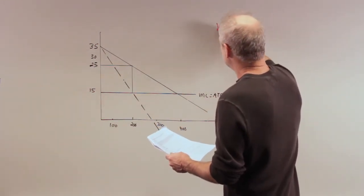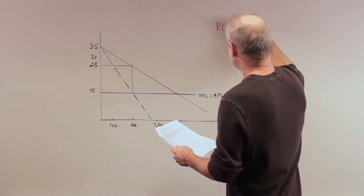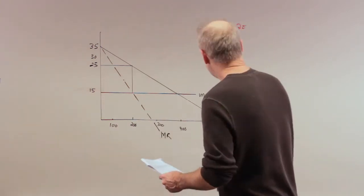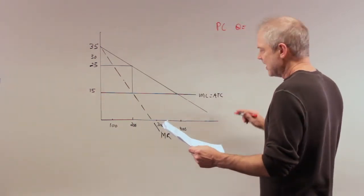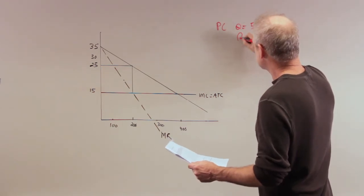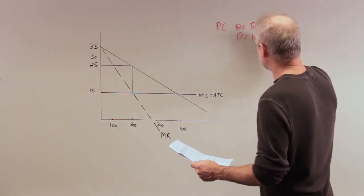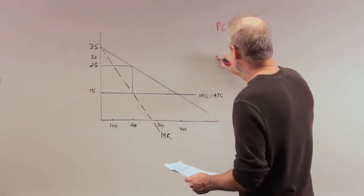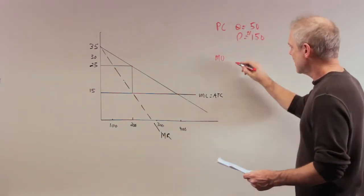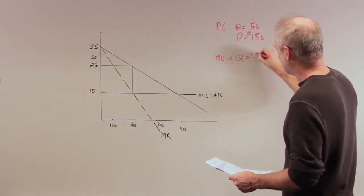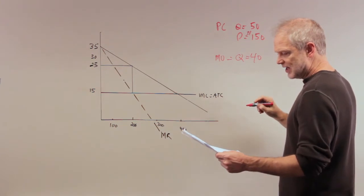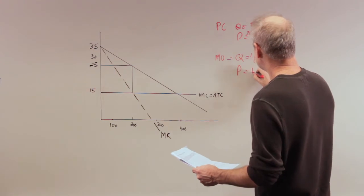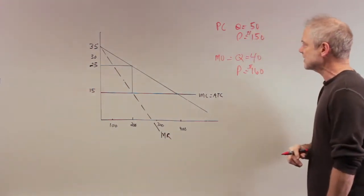Now, profit maximizing output. I'll do this. The perfectly competitive market is producing 50 units and price is equal to $150. That's that part of the question that talks about perfect competition. The monopolist is charging a price, producing 40 units and is charging a price of $160.